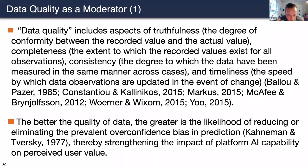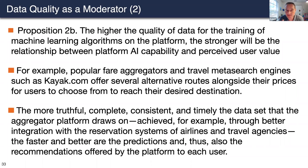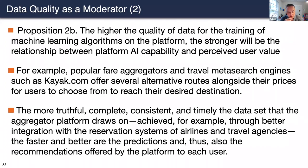Proposition 2b: The higher the quality of data for training machine learning algorithms on the platform, the stronger will be the relationship between platform AI capability and user value. For example, popular fare aggregators and travel search engines such as kayak.com offer several alternative routes alongside their prices. The more truthful, complete, consistent, and timely the dataset the aggregator platform draws on, the faster and better are the predictions and recommendations offered to each user.